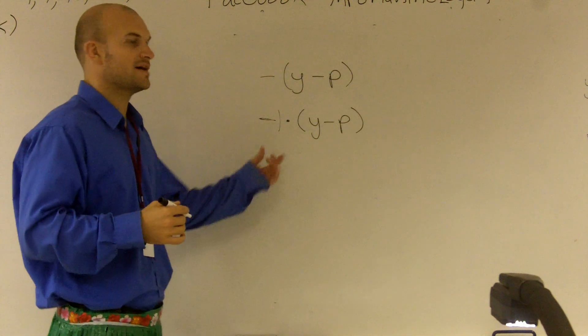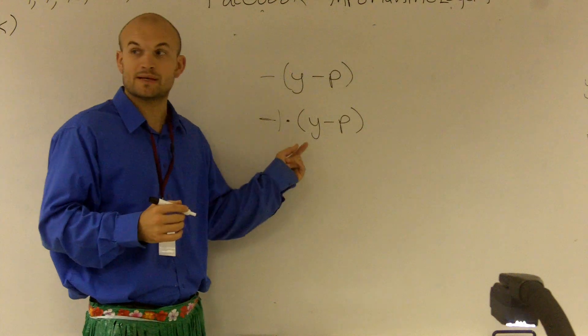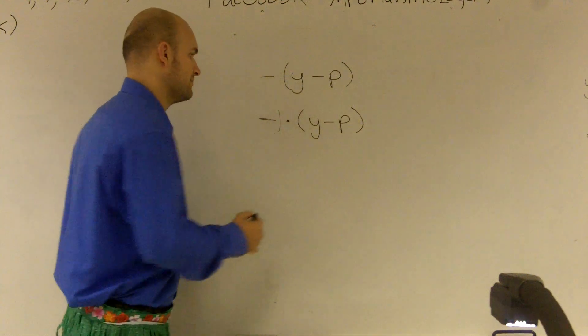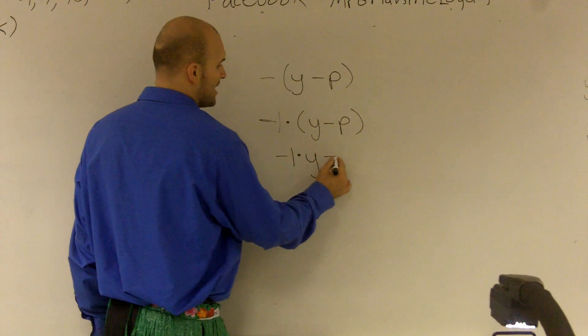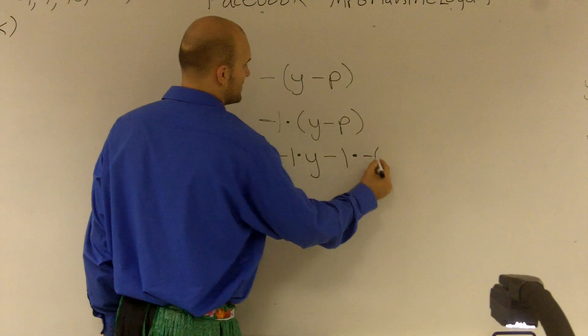And that helps people now see that, alright, I am actually distributing a number. I'm distributing a negative 1. So I really have negative 1 times y, and then minus 1 times a negative p.